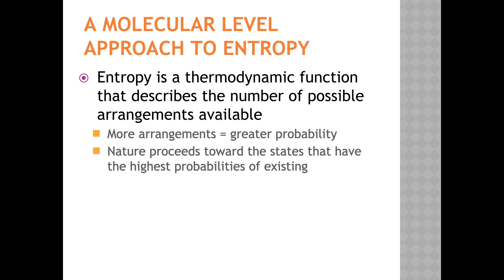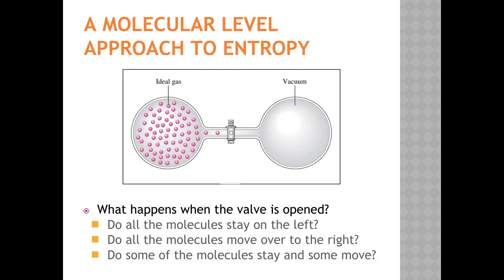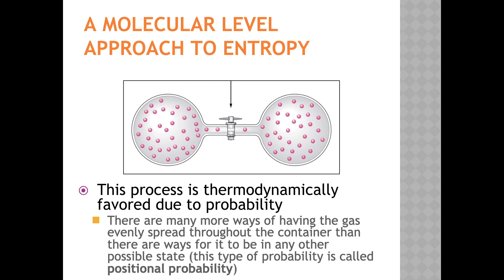To illustrate this point on a molecular level, let's consider an ideal gas which expands into an evacuated bulb. Here's our ideal gas showing about 100 molecules, all in the left bulb, closed off from the right side which is completely empty. What happens if we open the valve and wait? Will they all stay on the left? Will they move over to the right? Will they split up about 50-50 on each side? The ideal gas molecules spread out and fill their container such that you get about 50 molecules on the left bulb and about 50 molecules on the right.